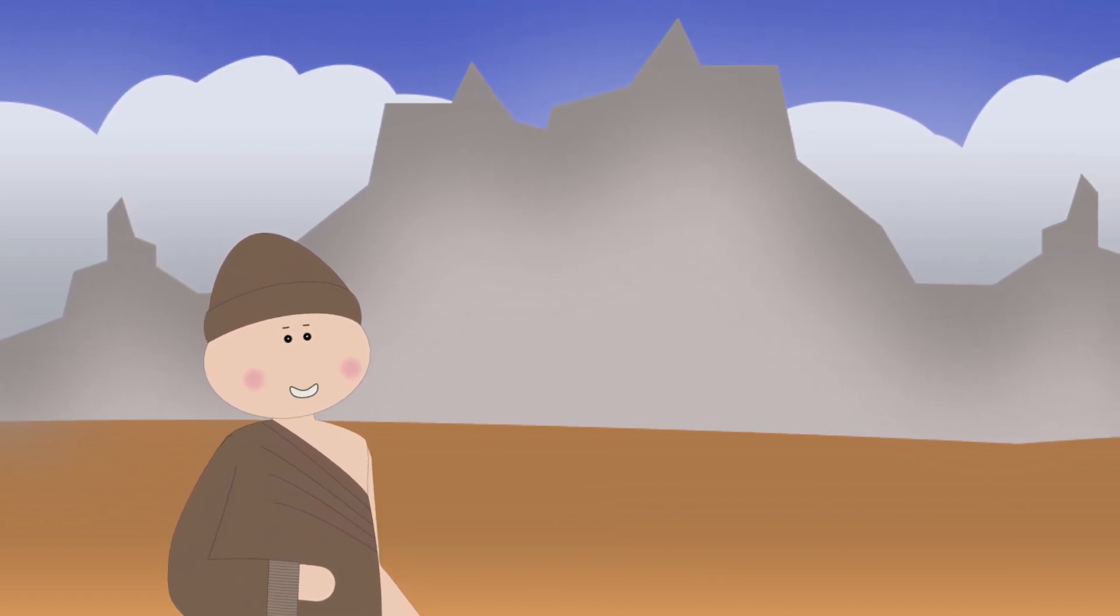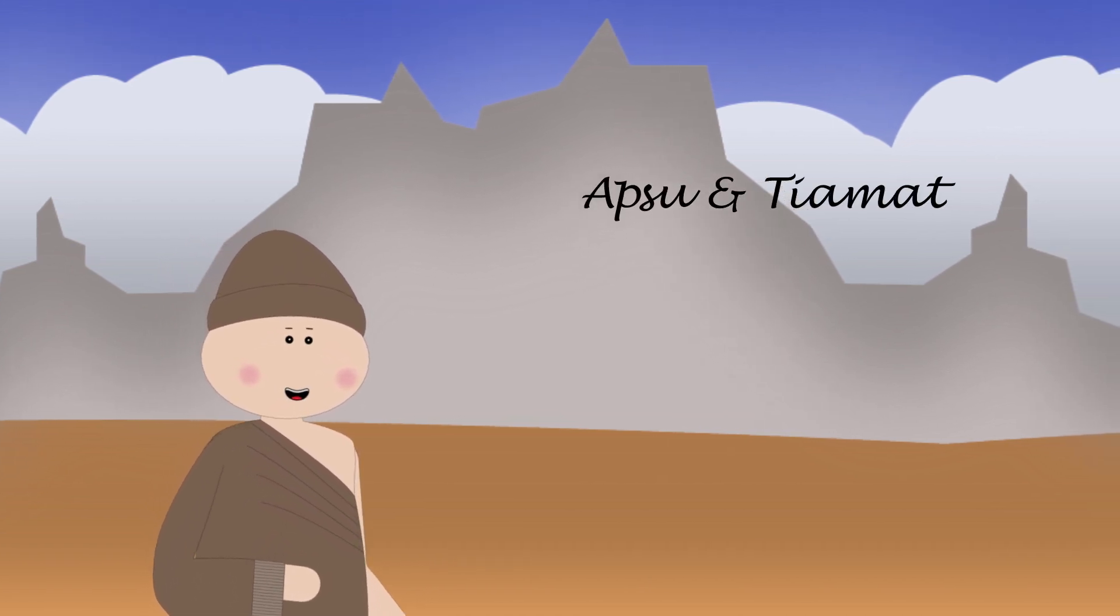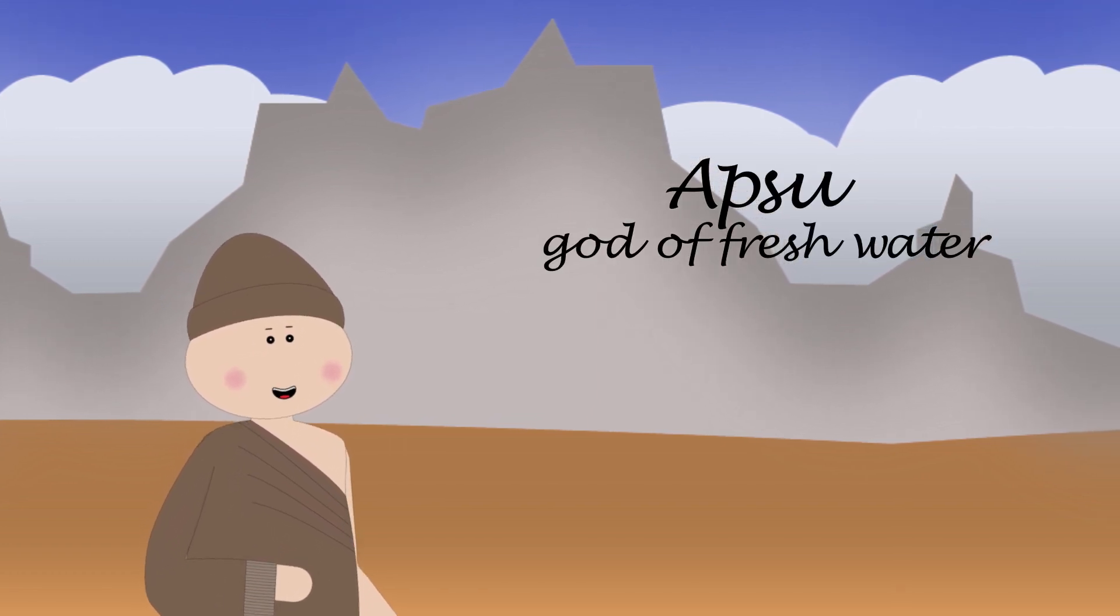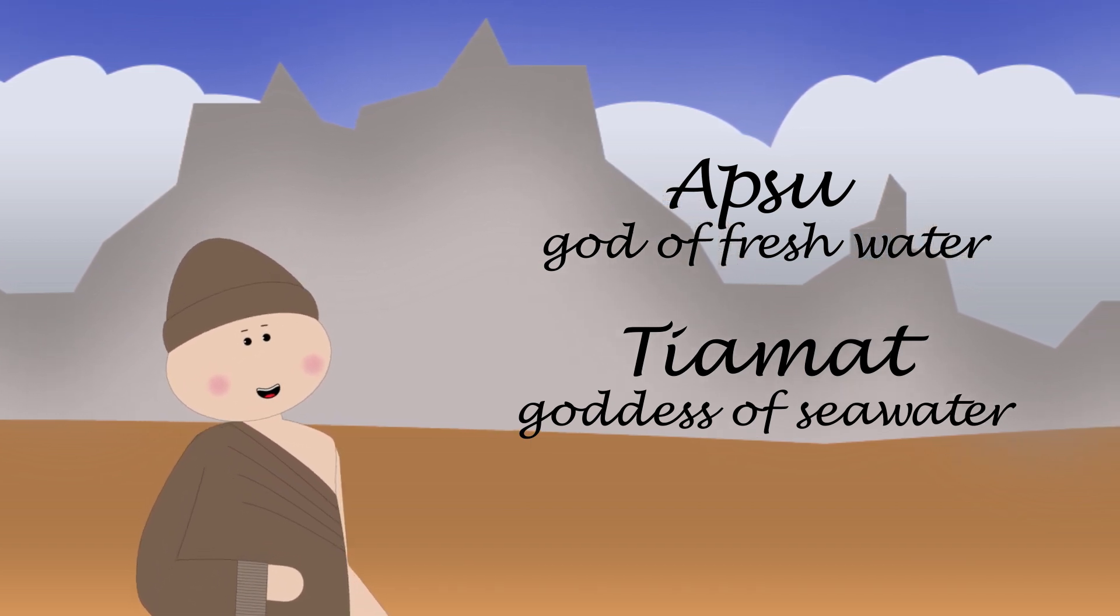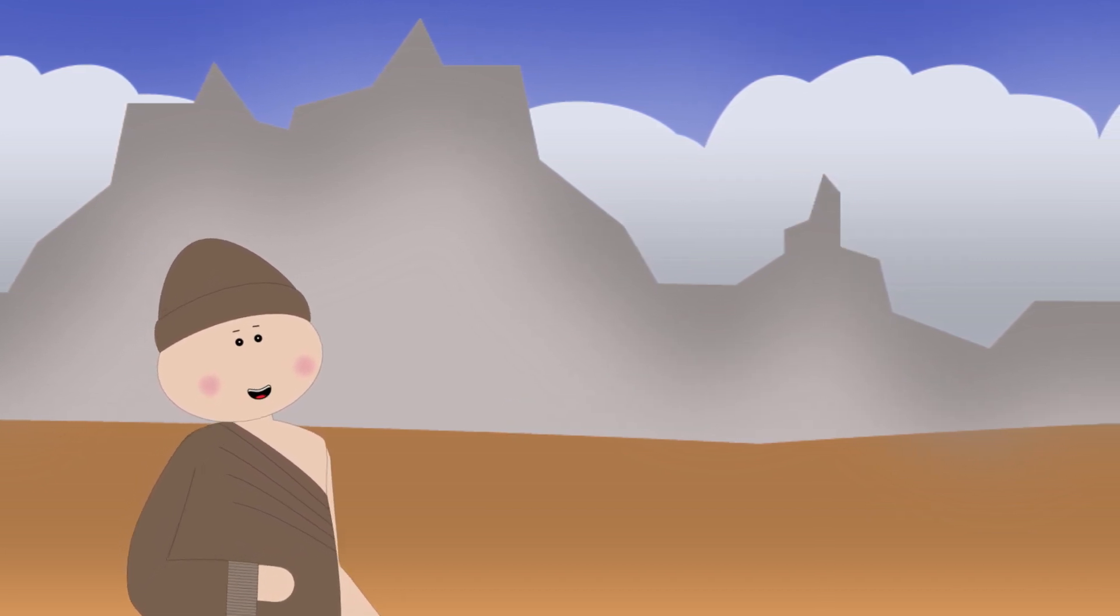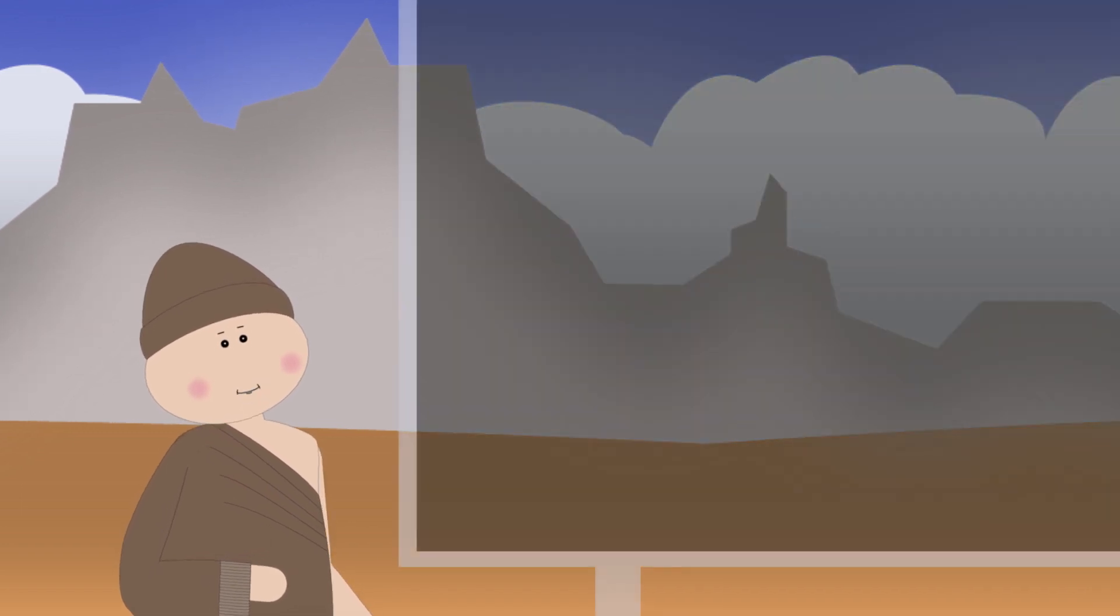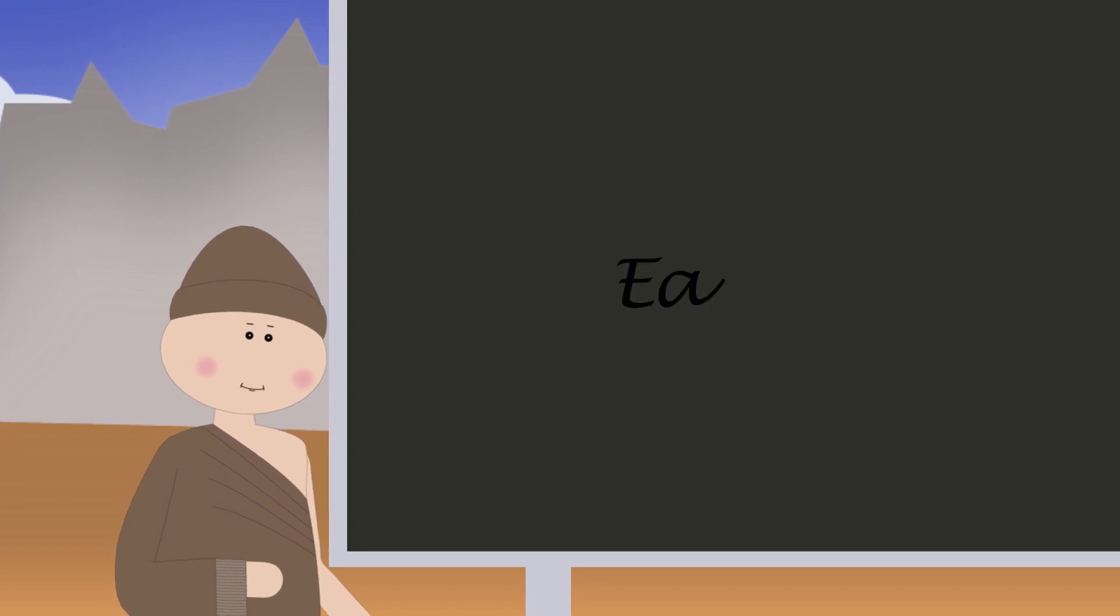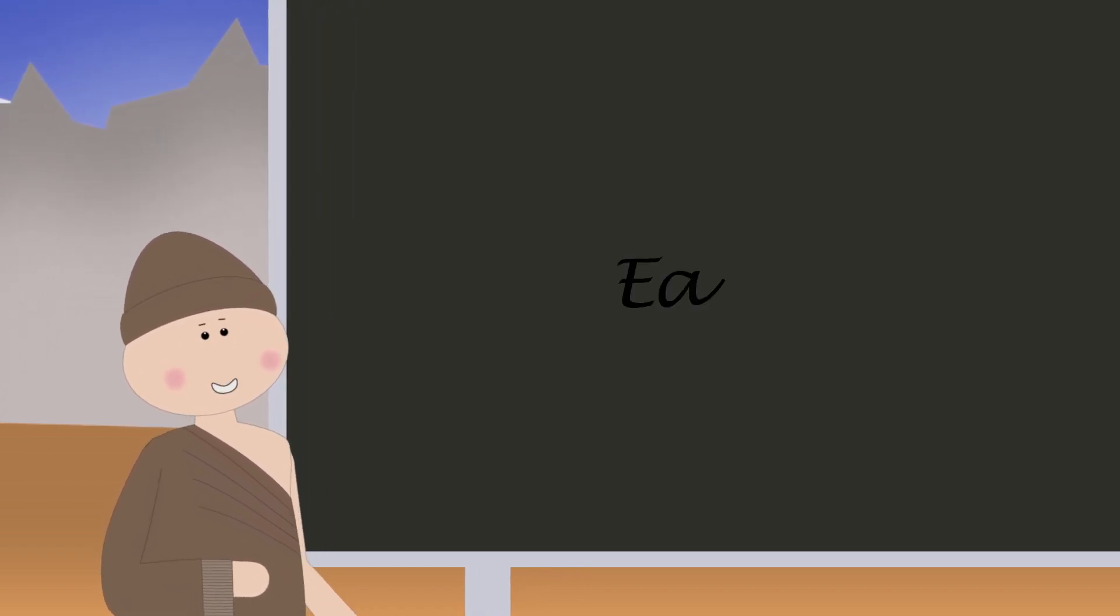Apsu is the god of fresh water, of rivers and lakes, and Tiamat is the goddess of seawater. Out of these two gods, the rest of the deities come into existence. When their sons misbehave, Apsu gets tired of them and decides to kill them. Tiamat, however, informs one of the sons, Iya, of the plan. Iya then kills Apsu in his sleep and takes his place as the supreme god.